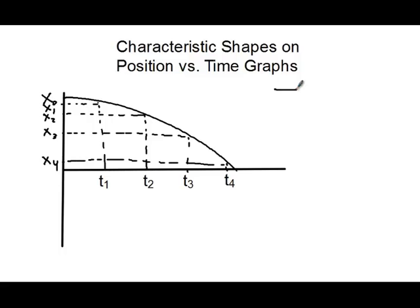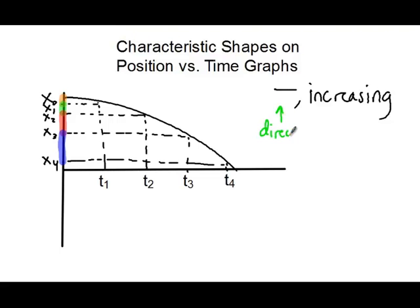Speeding up and slowing down is just based on speed — is it covering more distance in every time period? From x0 to x1, very small distance. x1 to x2, a little bit more. x2 to x3, even more. x3 to x4, even more. So the object is speeding up — it's covering more distance every second. That's a difficult one for people, because you see it getting more and more negative. But the negative just tells us the direction — positive and negative just mean direction. When we see it getting steeper and steeper going down, imagine yourself on a roller coaster going down that hill — you get faster and faster. So we have a negative but increasing velocity.